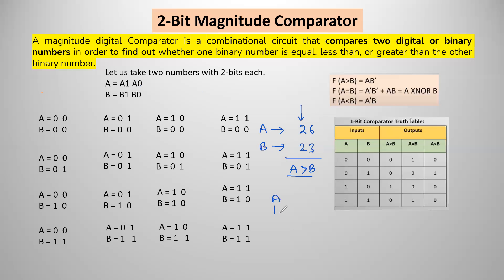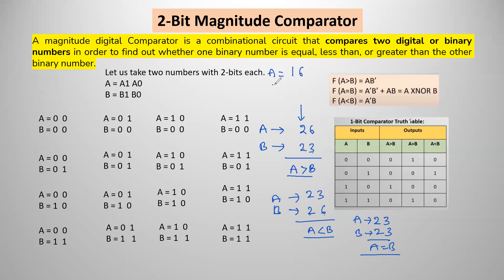Similarly, if a is 23 and b is 26, the tens digits are both 2 — equal — then 3 is less than 6, so a is less than b. If both numbers are 23, then a equals b. Now suppose a equals 16 and b equals 23: we compare the leftmost digits — 1 versus 2 — 1 is less than 2. So no need to compare the next lower order digits; just with the MSB bits we can say a is less than b.